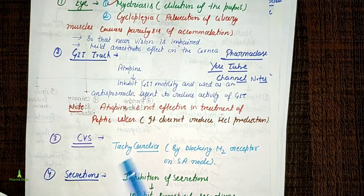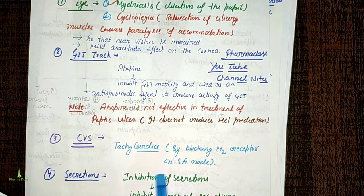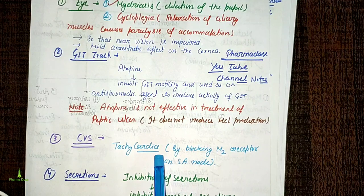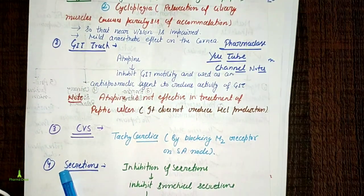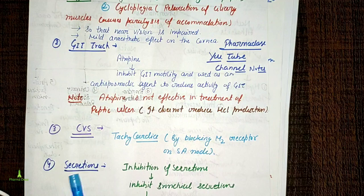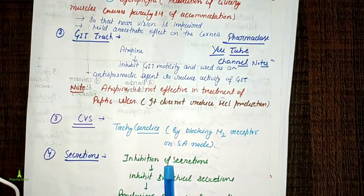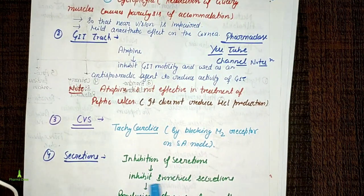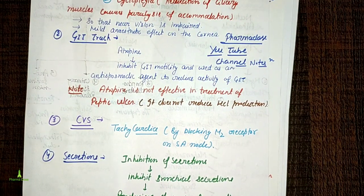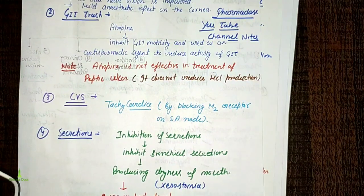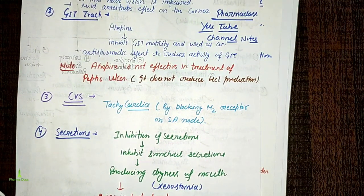On the heart we have M2 receptors. Atropine blocks these, producing a positive chronotropic effect — tachycardia. Regarding secretion: atropine causes inhibition of secretion. It inhibits bronchial secretion and produces dryness of mouth, which is called xerostomia. Xerostomia (dry mouth) is therefore a side effect of atropine.